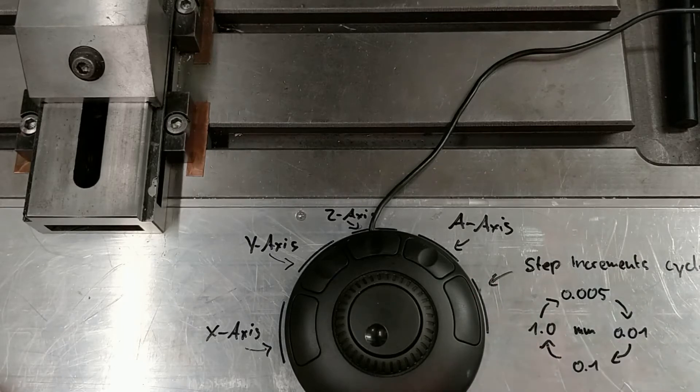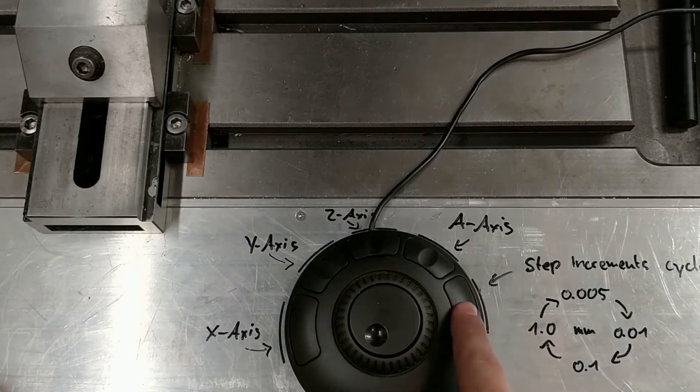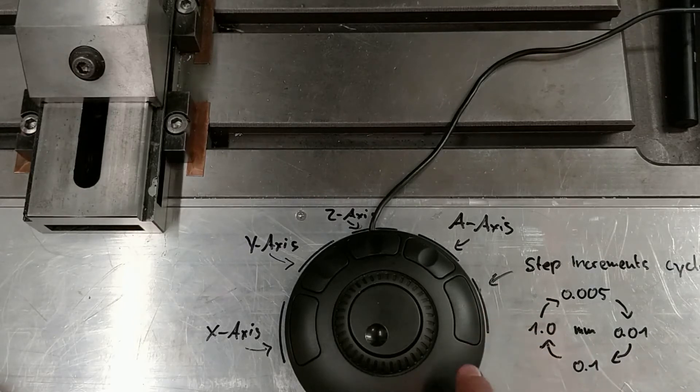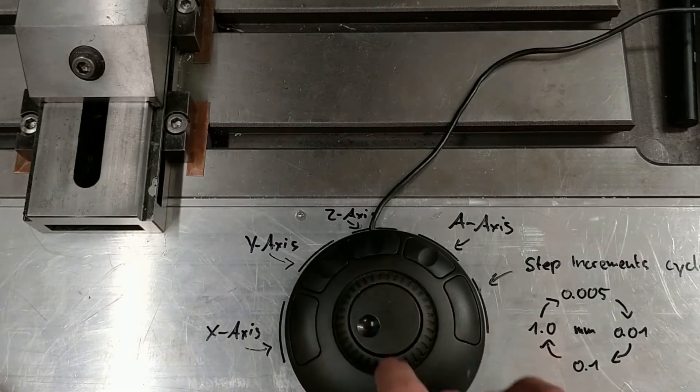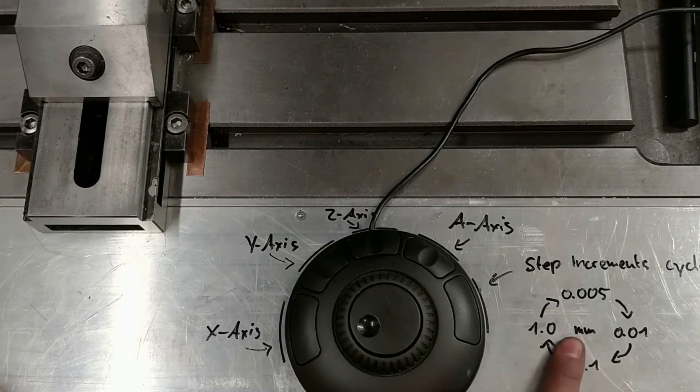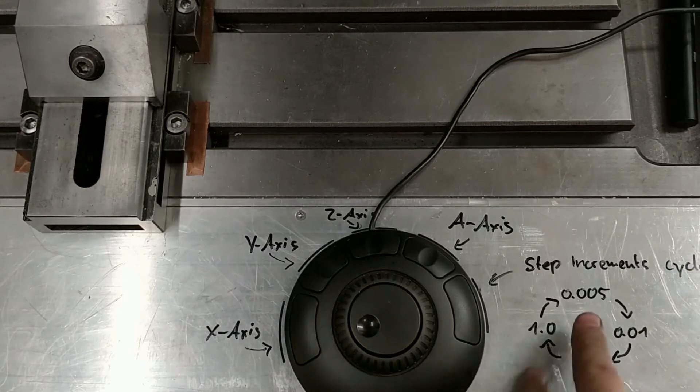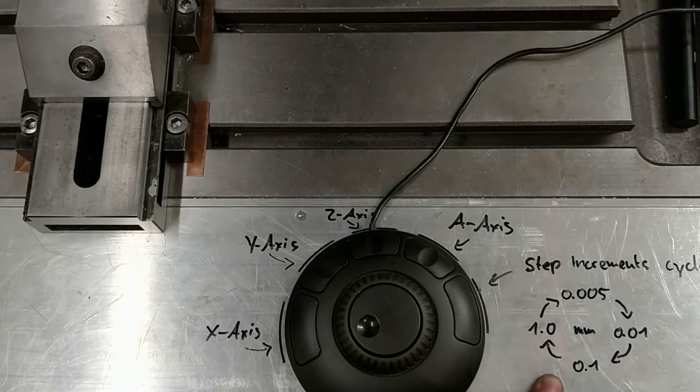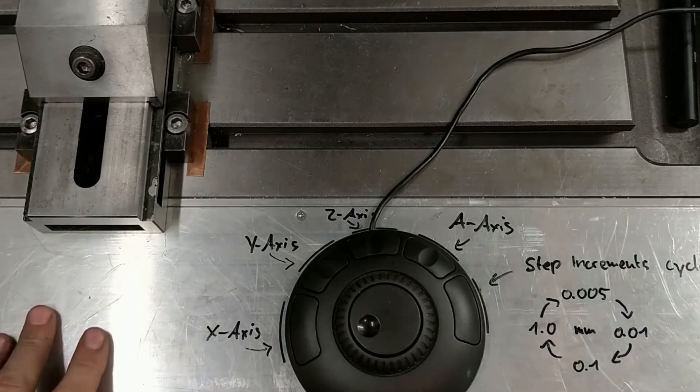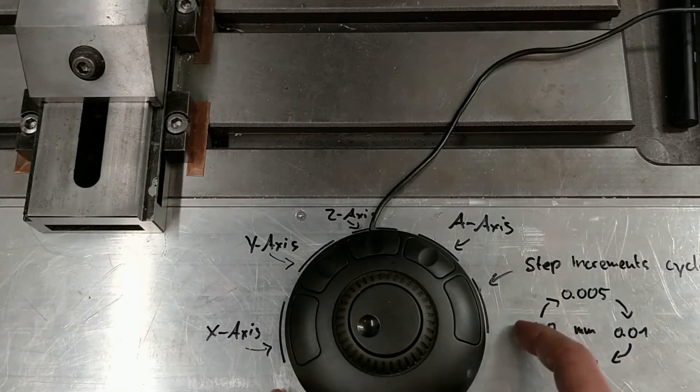So it's 0.01, 0.1, 1 millimeter. That means if I turn this one increment, the selected axis will also move this amount. It's completely free to you how many different step increments you add to the cycle. It's just a configuration in LinuxCNC.